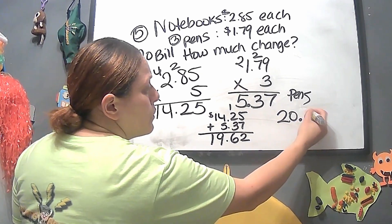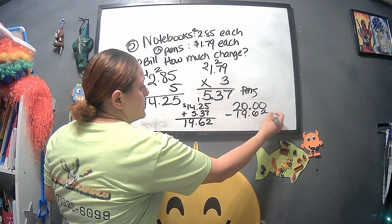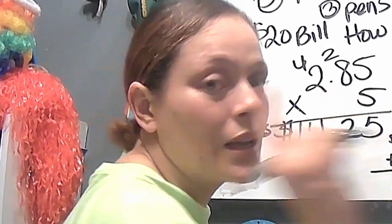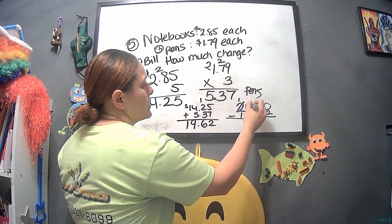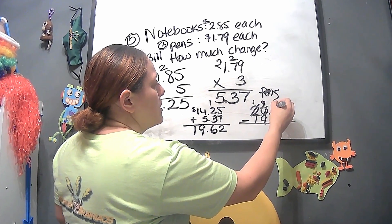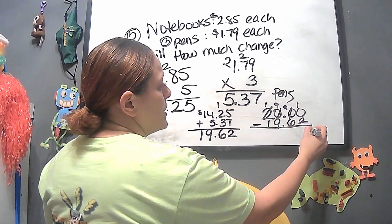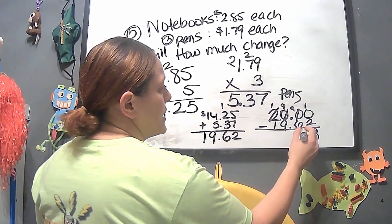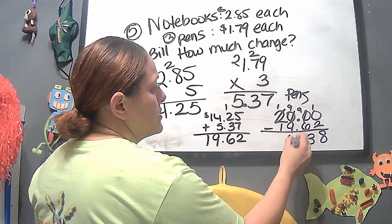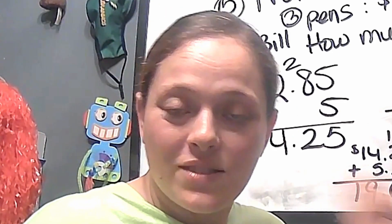Maddie paid with a $20.00 bill. With a whole number we add decimal zeros: 20.00 minus 19.62. We have to do a lot of regrouping — be careful. Regroup: ten minus two is eight, nine minus six is three, nine minus nine is zero, and zero. So Maddie receives $0.38 in change. She could buy some gum with that!